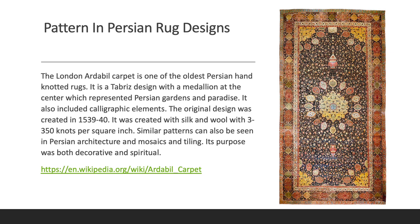Pattern in Persian rug designs. The London Ardabil carpet is one of the oldest Persian hand-knotted rugs. It is a Tabriz design with a medallion at the center which represented Persian gardens and paradise. It also included calligraphic elements. The original design was created in 1539 to 1540, with silk and wool with 300 to 350 knots per square inch. Similar patterns can also be seen in Persian architecture and mosaics and tiling. Its purpose was both decorative and spiritual.